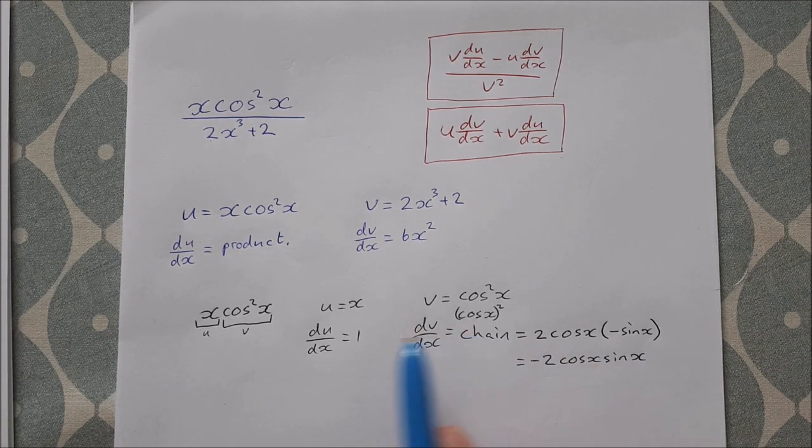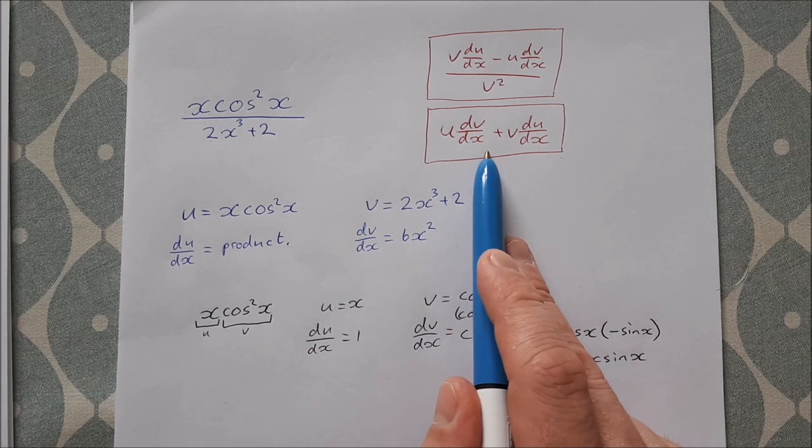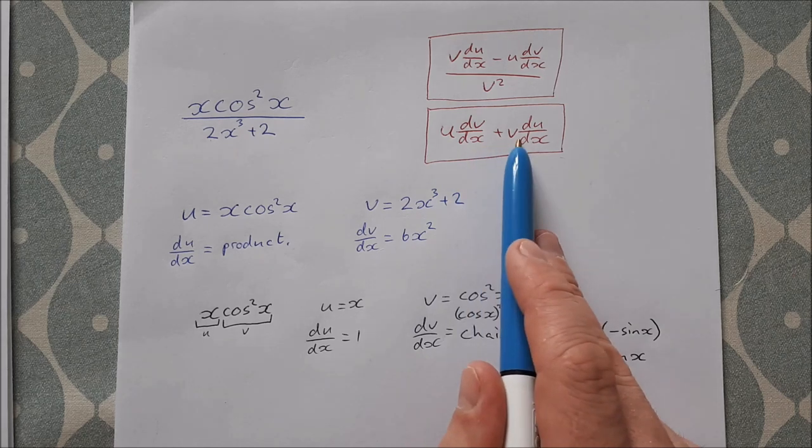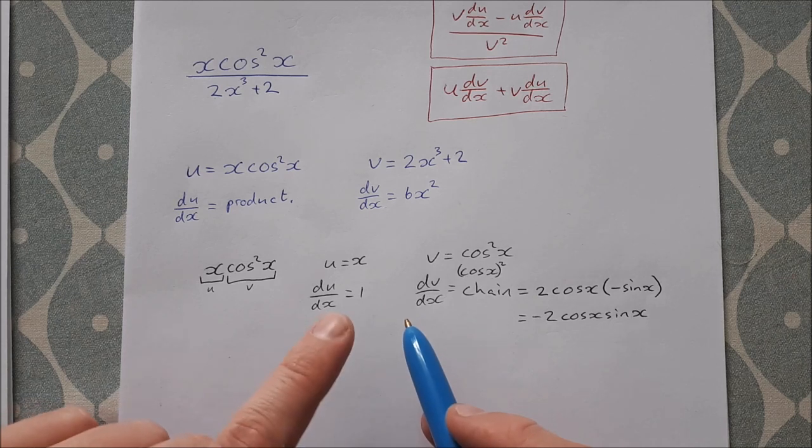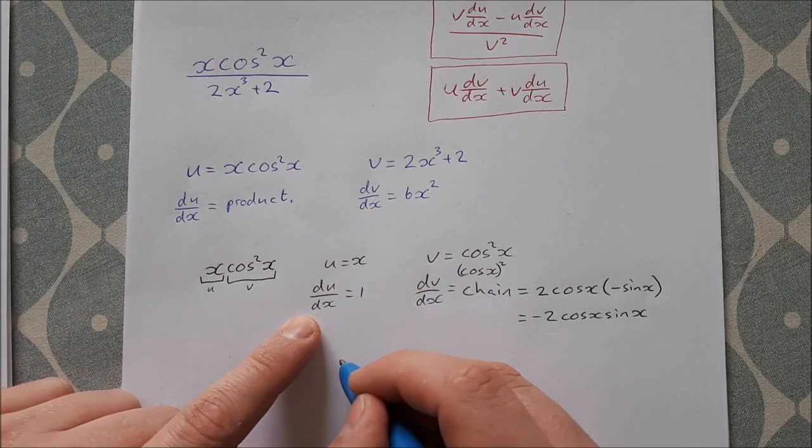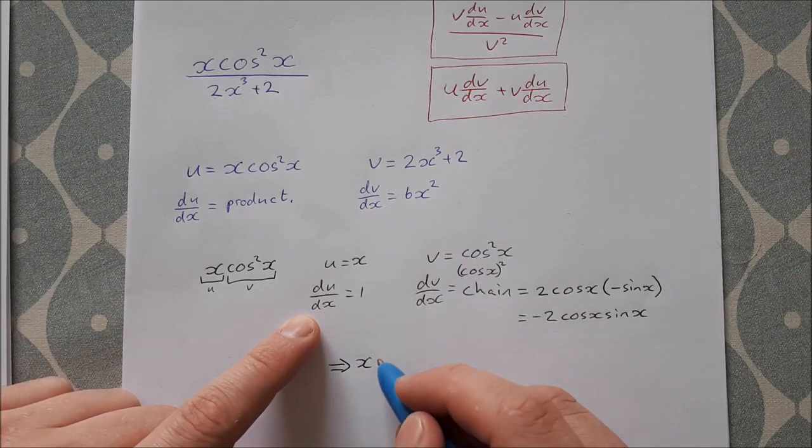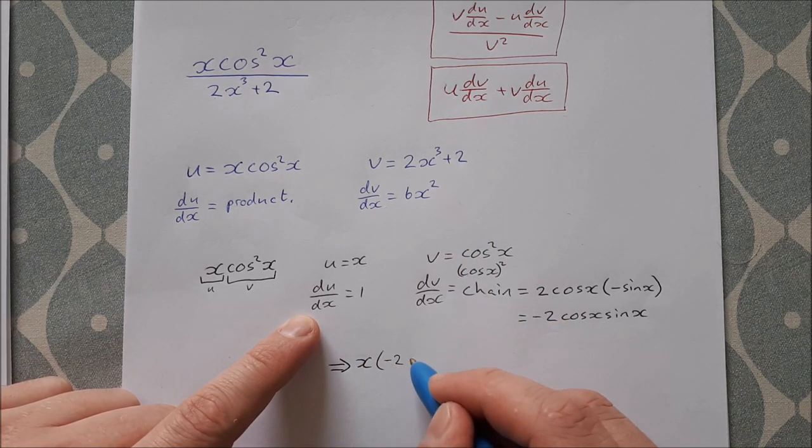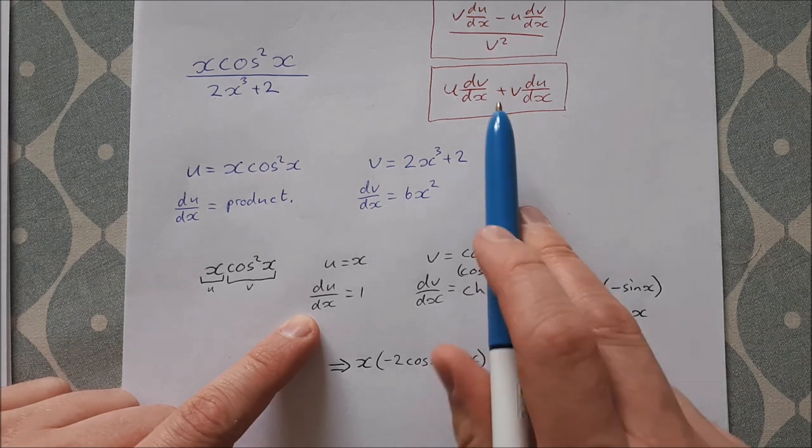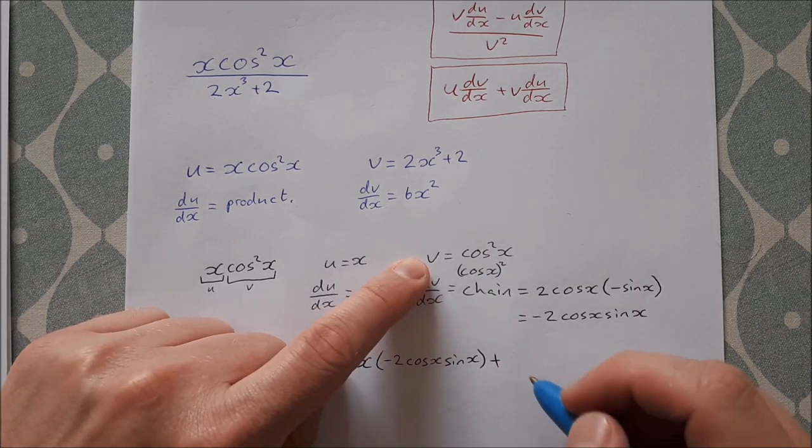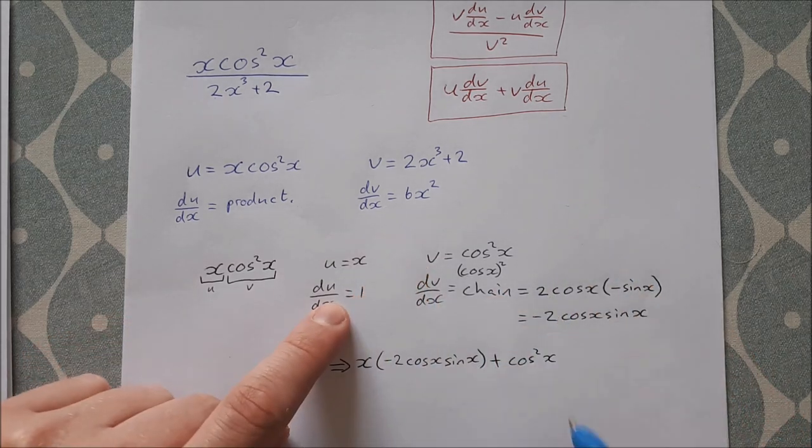Okay, so let's now put this back into here and write out our product rule to get this part. So here's the product rule: u dv/dx + v du/dx. So that's u, which is x, times dv/dx, which is -2 cos x sin x, plus v, which is cos²x, times du/dx, which is 1.